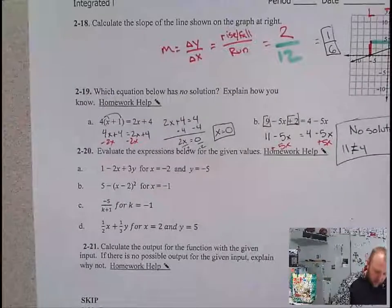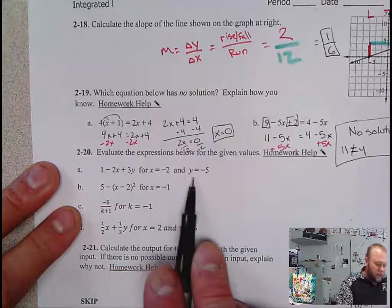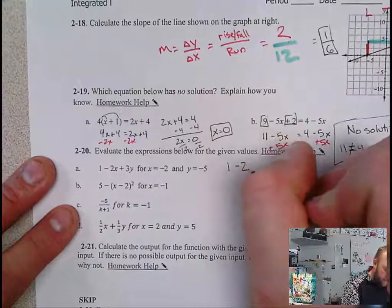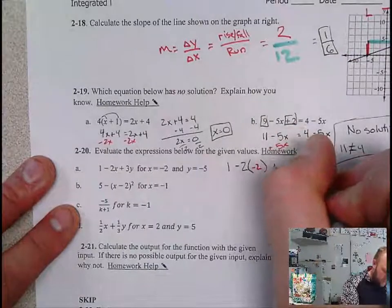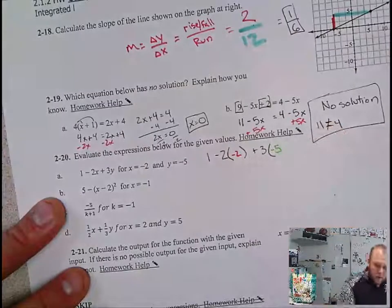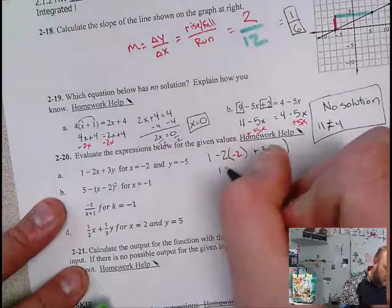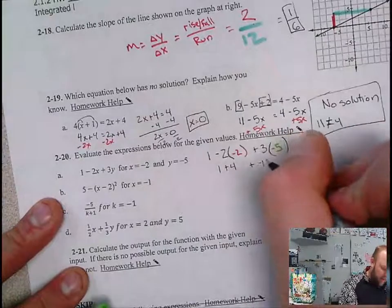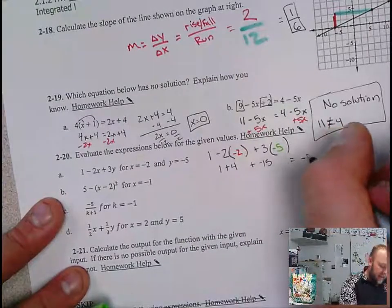Next up, evaluate the expression below for the given values. 1 - 2x + 3y for x = -2 and y = -5. So here we're going to substitute those values in. My x value of negative two. Negative two times negative two is positive four. So 1 + 4 + 3 times negative five is negative 15. One plus four is five plus negative 15 is negative 10.